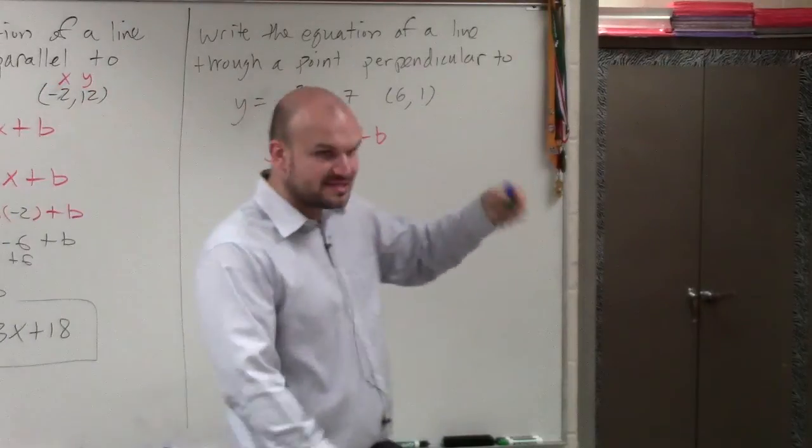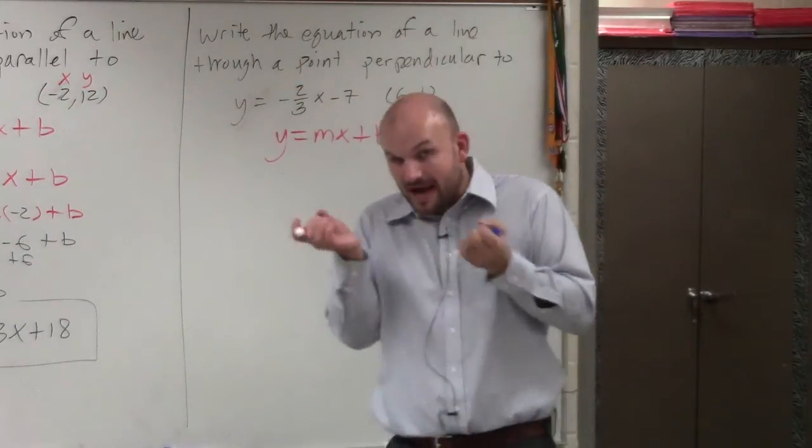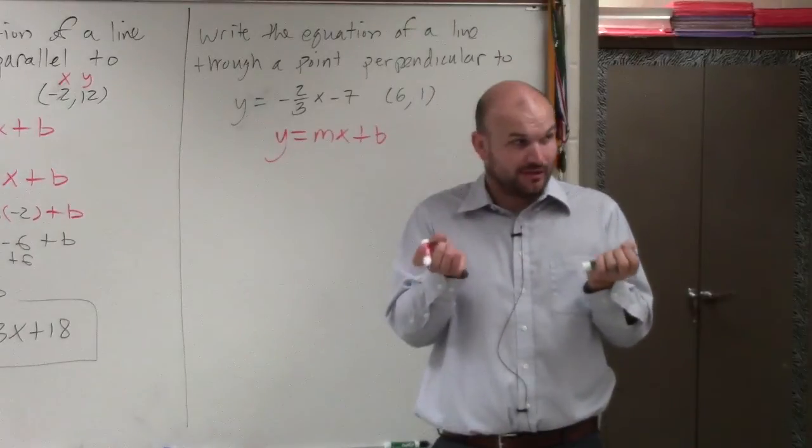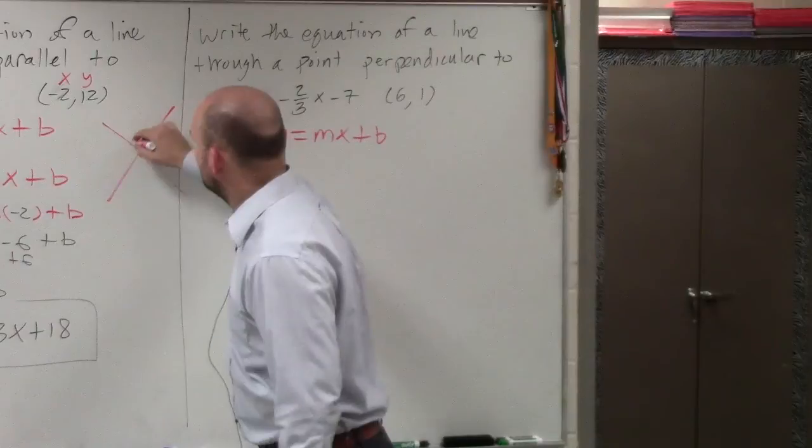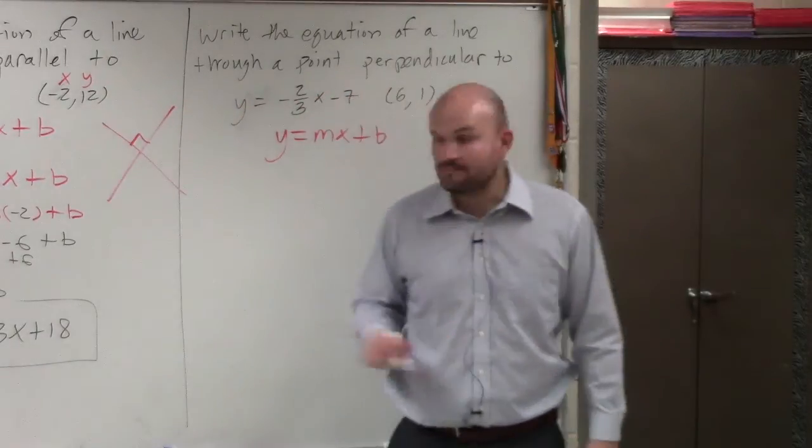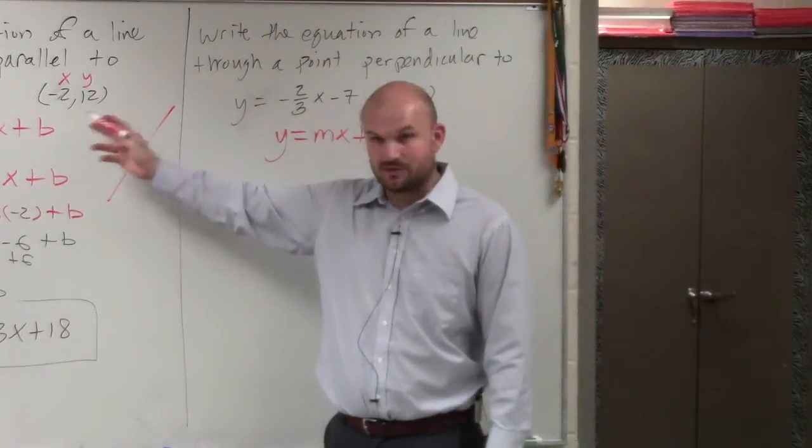Perpendicular lines have what we call opposite reciprocals. That means they're opposite in sign. Perpendicular lines, one's positive. So if you have perpendicular lines, they intersect at a 90-degree angle. One has a positive slope, one has a negative slope.